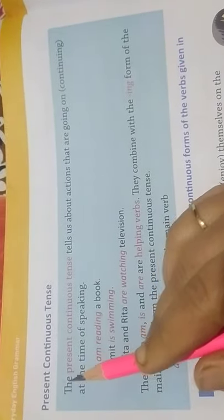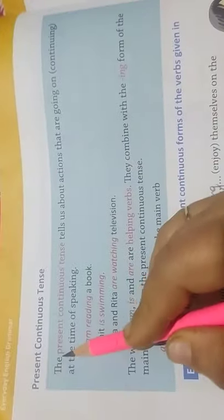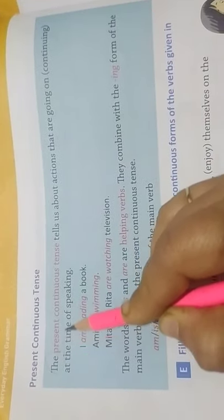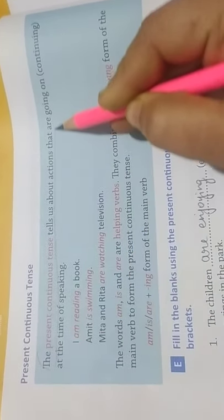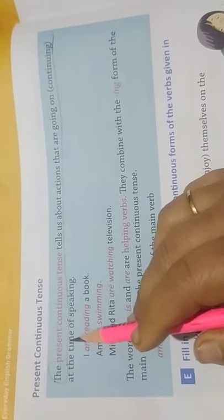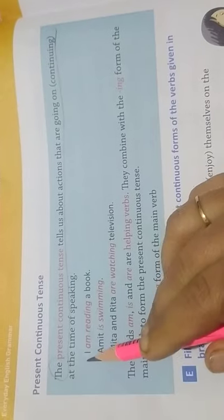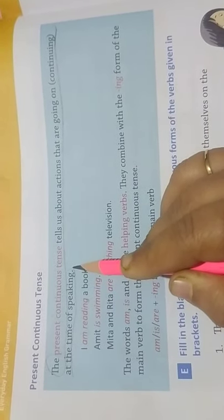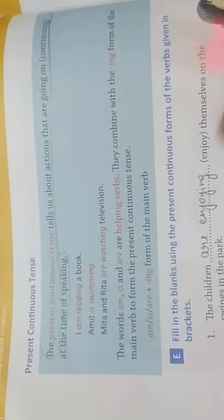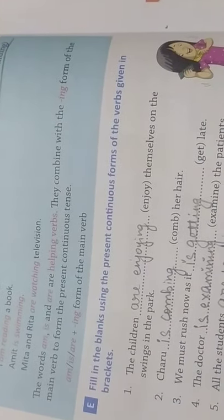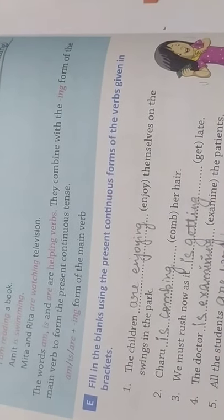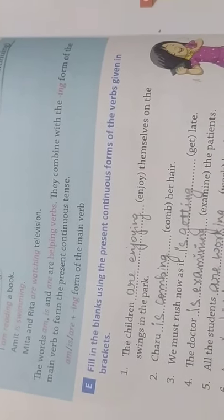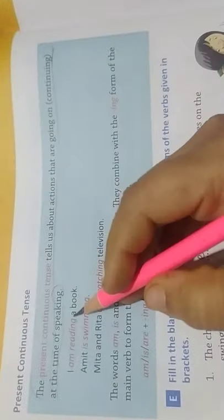The present continuous tense tells us about the actions that are going on — that is, continuing at the time of speaking. Hum jab bhi wo sentence bol rahe hain, tab wo action abhi bhi chal raha hai.